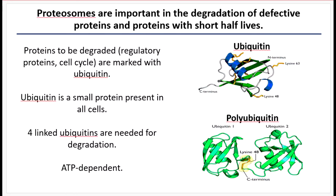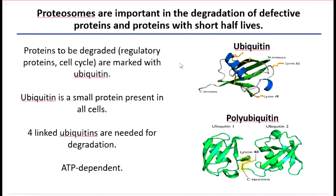Proteasomal degradation is the general turnover of regular proteins or toxic proteins in the cell, happening in every cell in your body as part of quality control and cell maintenance. This helps to control the presence of certain proteins — for example, if you have a steroid hormone in the cell that's activating gene transcription in response to stress, you want to be able to degrade that protein to stop the stress response. The proteasome also degrades defective proteins that were folded improperly — something like a molten globule would be recognized by the proteasome and degraded because it's toxic.